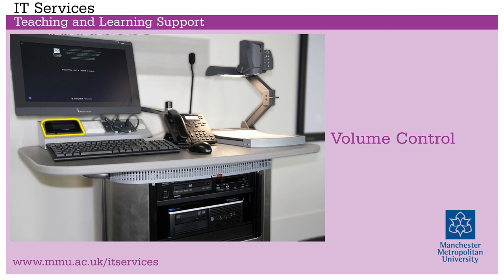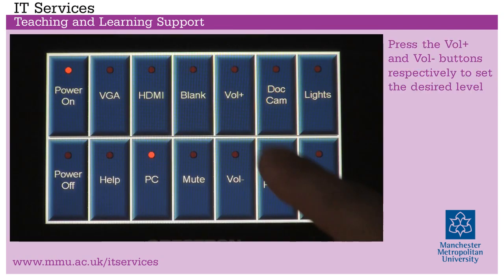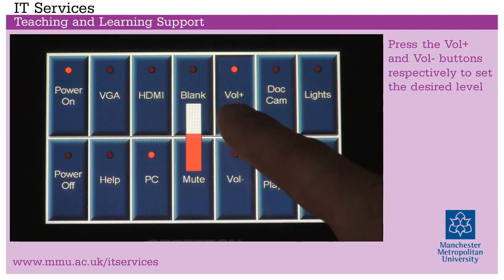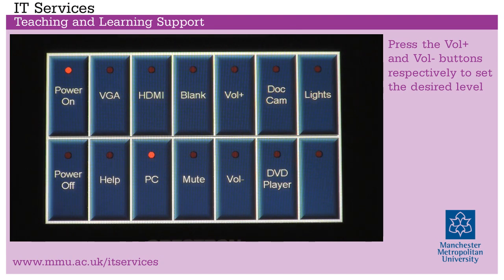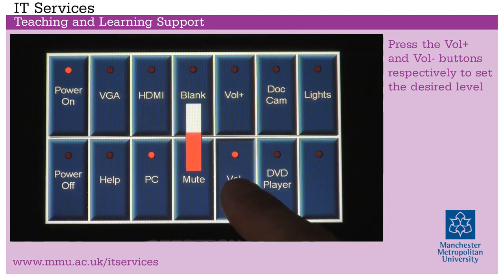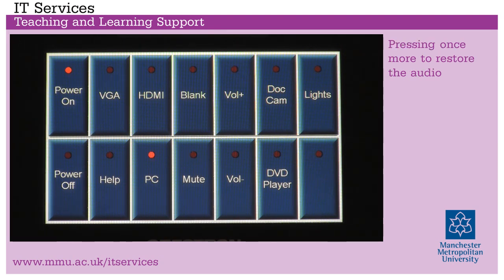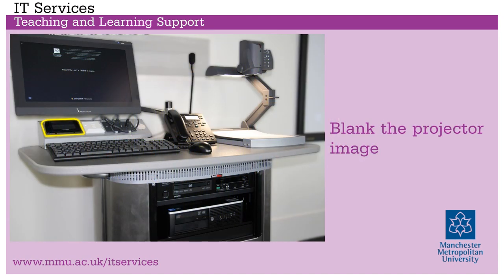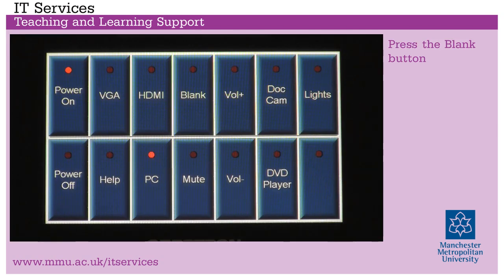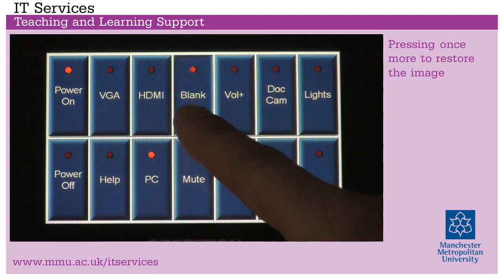Volume control. Press the Vol plus and Vol minus buttons respectively to set the desired level. Mute the audio by pressing the mute button, pressing once more to restore the audio. To blank the projector image, press the blank button, pressing once more to restore the image.